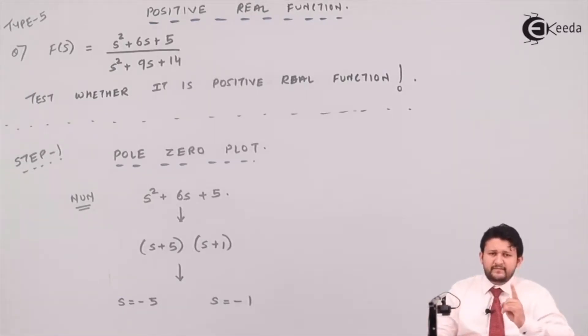Step number one: plot pole zero. Step two: check whether to carry the residue test or not. Step three: find the value of A of omega squared. Three steps. First, check or find the pole zero. Second, whether to find out or carry residue test or not. Step three, find A of omega squared. These three steps need to be followed.